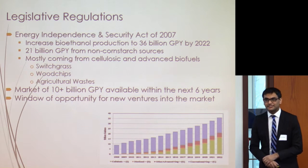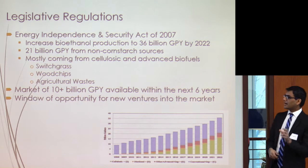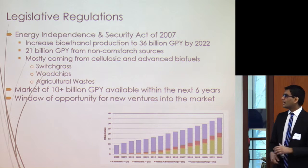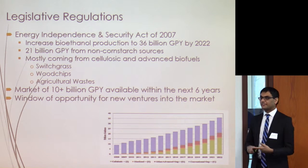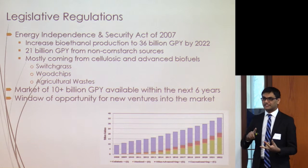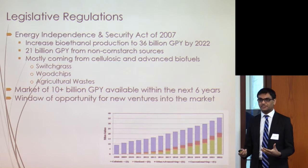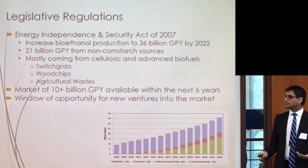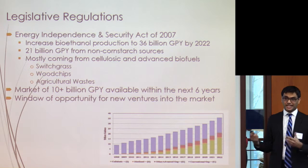Congress passed the Energy Independence and Security Act in 2007, which aimed to increase bioethanol production to about 36 billion gallons per year by 2022. Right now we're at 14 billion gallons — a huge opportunity. 21 billion gallons of this 36 billion gallon target needs to come from non-corn sources, as Congress recognized the problems with corn. Most of this should come from cellulosic and advanced biofuels such as switchgrass, wood chips, or agricultural wastes. We plan on using this window of opportunity to enter the market.